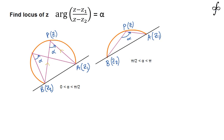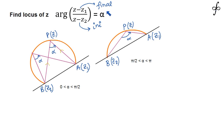According to the rotation concept, we consider z - z2 to be the initial position of the rotation and z - z1 to be the final position. So from the initial position we are rotating up to the final position, traveling an angle alpha. This is the geometrical significance of this statement.